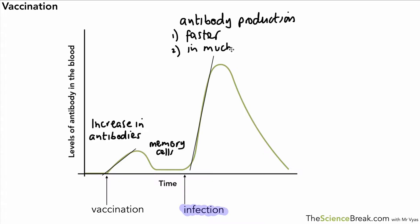And the second thing is that we get antibody production in much larger numbers and that is shown by the graph again with a much higher point for the second peak compared to the first peak.